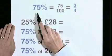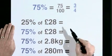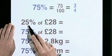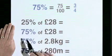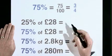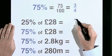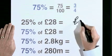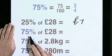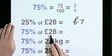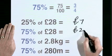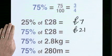75% is three quarters, 25% is one quarter. 25% of 28 pounds is 7 pounds, so 75% of 28 pounds must be 21 pounds.